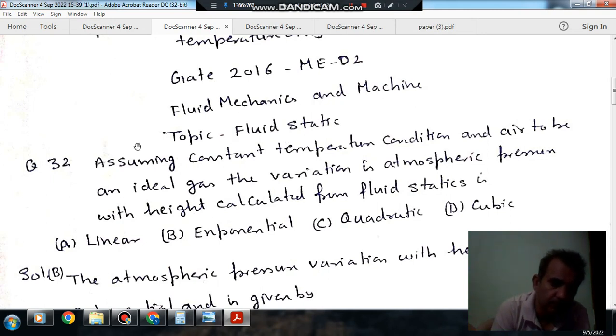Question number 32 from GATE 2016 ME-02. Assuming constant temperature condition and air to be an ideal gas, the variation of atmospheric pressure with height calculated from fluid statics is: